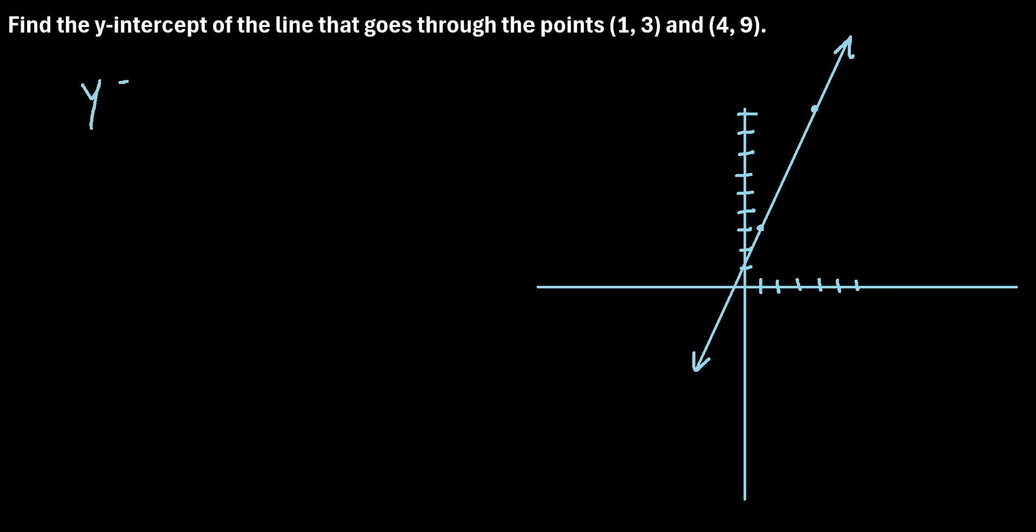We can write the equation of the line in the form y equals mx plus b, where m is the slope of the line and b is the y-intercept. So this b is really what we want to find. So to do that, we first have to find m, the slope of the line.